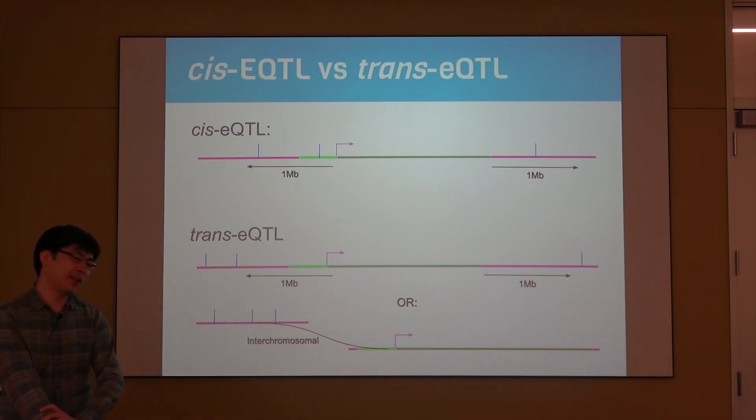I think that covers everything on eQTL analysis, the basics of eQTL analysis. Hopefully in the future we'll talk about other finer details such as imputation and reasons why we have to account for minor allele frequency and things like Hardy-Weinberg equilibrium. Thank you everyone for listening.